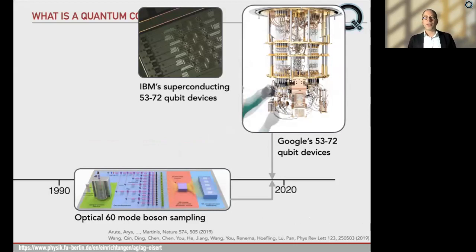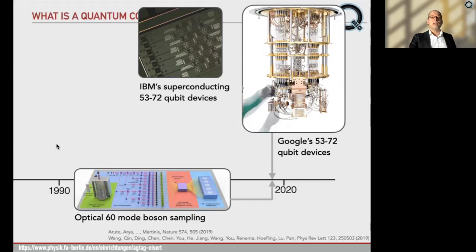Around the same time, large-scale photonic structures became available in Chen Wei Pan's group in China. And indeed, for paradigmatic sampling problems, in fact, for random circuit sampling, what is called a quantum advantage has been claimed of just solving some task on a quantum computer that is out of reach on a classical supercomputer. The upshot is that one can sample from the output distribution of such a machine and get a pretty flat, pretty boring, close to uniform distribution, but not quite.